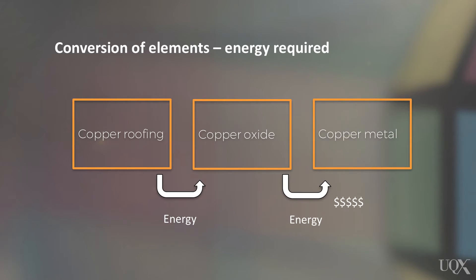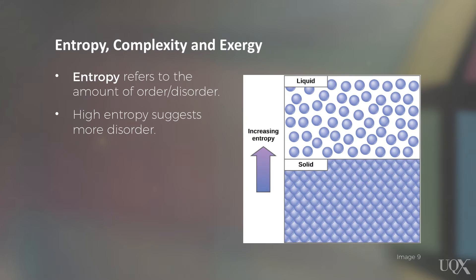Copper used in roofs may get oxidized to copper oxide and it can even be converted back to copper metal, but this may require more energy than we can afford. We are essentially creating order versus disorder in the physical state of the element. In this sense, the measure of order is what we refer to as entropy.